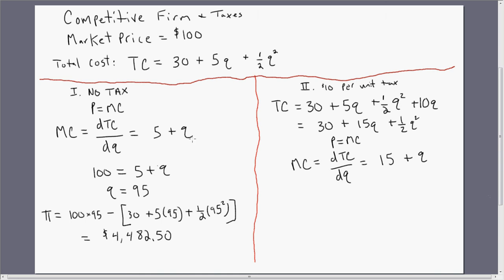And you'll notice here that the difference between the marginal cost with and without the tax is that $10. 5 plus Q, this is 15 plus Q.